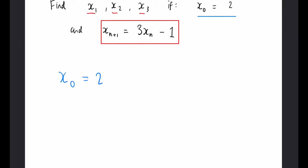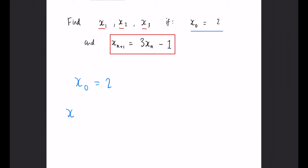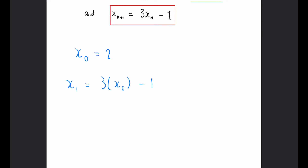So we know that x_1 is going to equal 3 lots of x_0 minus 1. Now we know that x_0 is 2, so we can say x_1 equals 3 multiplied by 2 minus 1, and that's going to give us 6 minus 1 is 5. So x_1 equals 5.